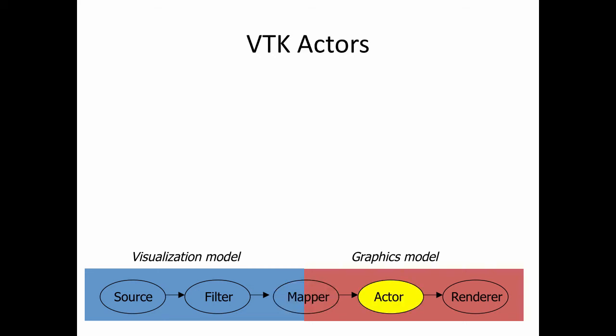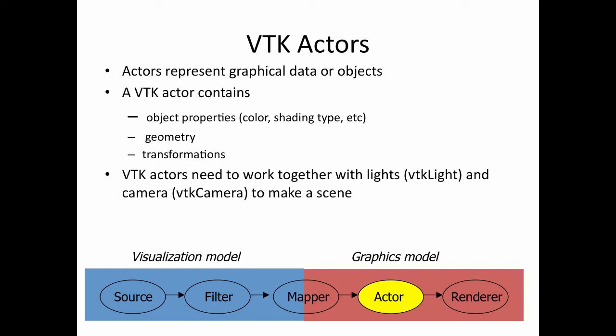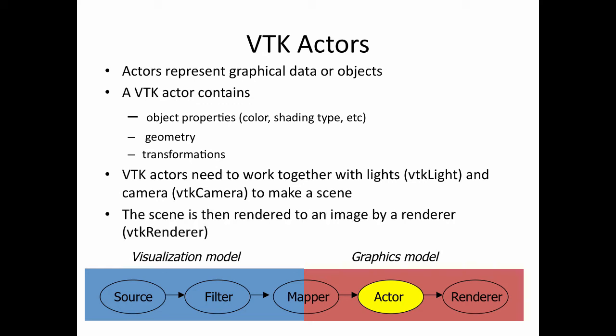The next object in the graphics model is the VTK actor. Actors are graphical data or objects. They contain object properties — for example, color, shading type, etc. They also contain geometry, such as a collection of triangles. Because graphical objects can be displayed anywhere in 3D space, and can be animated or resized, the actor also contains the transformations required to place the object in the final position. Actors do not contain lights or cameras — for example, VTK has a vtkLight class, and cameras are placed outside the actor. The actor is really just a representation of the object being rendered; lights and cameras are required to produce the final picture.